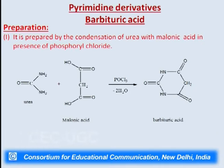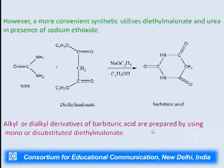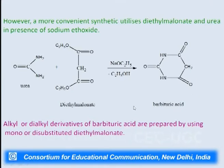Now comes the pyrimidine derivatives. One of them is barbituric acid. It is prepared by a condensation method involving condensation of urea with malonic ester in the presence of phosphoryl chloride — two molecules of water go as a side product — to give barbituric acid. A more convenient synthetic method uses diethyl malonate, which also undergoes condensation with urea in the presence of sodium ethoxide — ethanol goes out as a side product — to give barbituric acid. Alkyl or dialkyl derivatives of barbituric acid are also prepared by using mono- or di-substituted diethyl malonate.